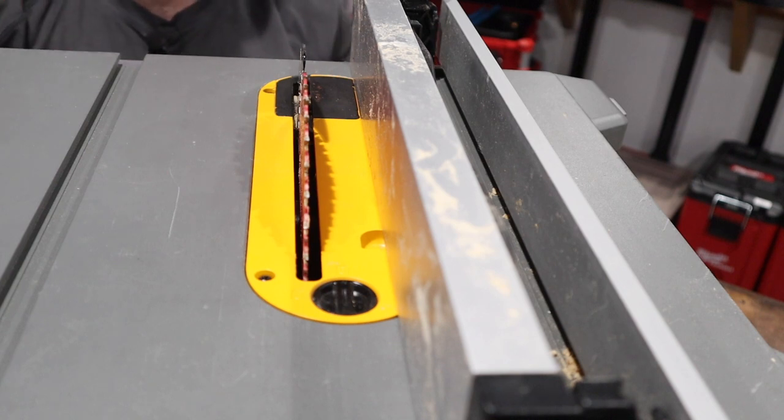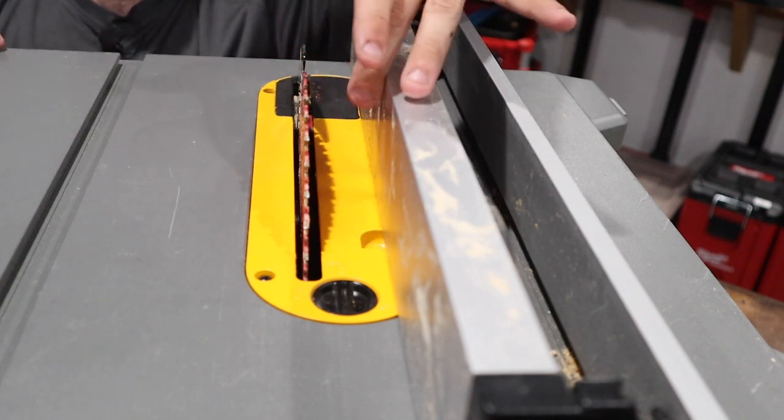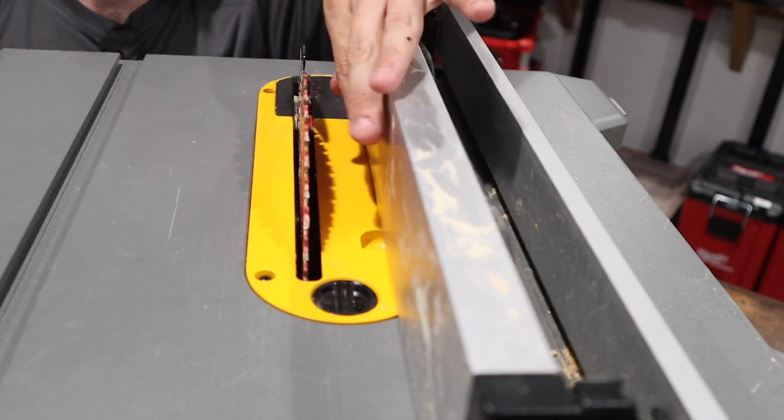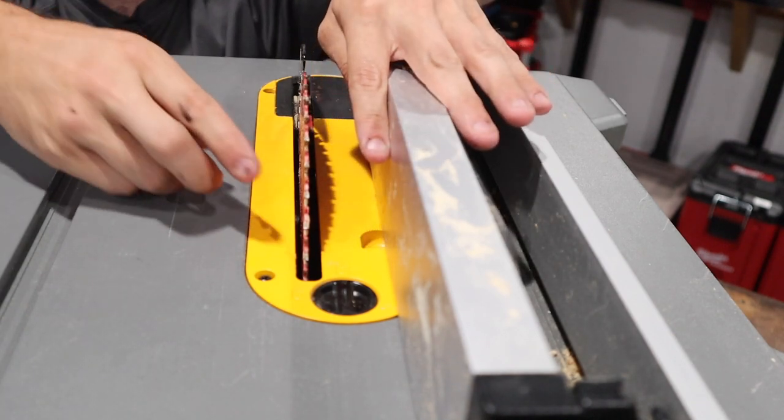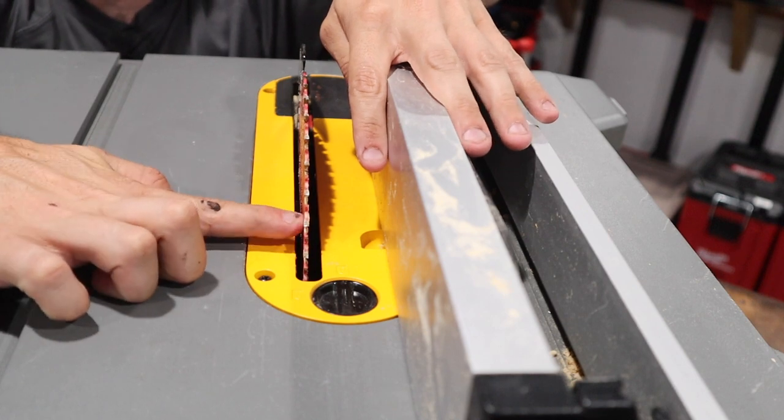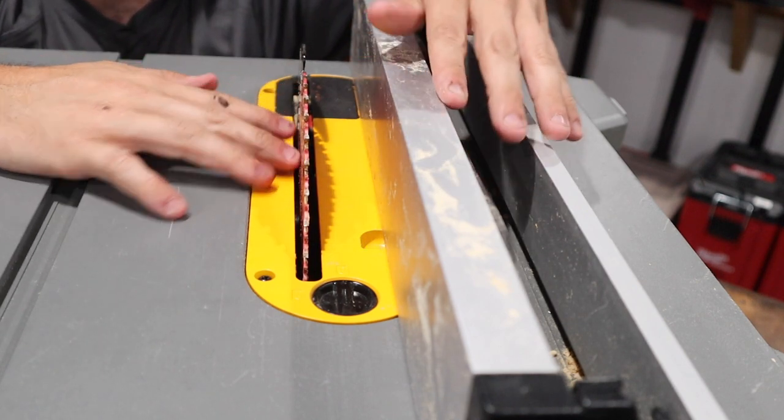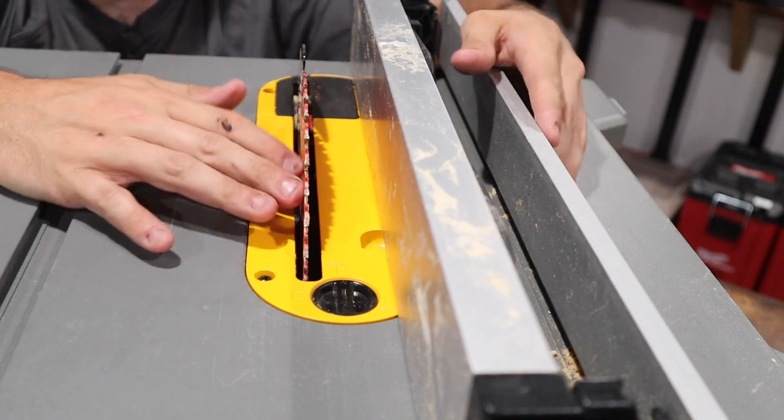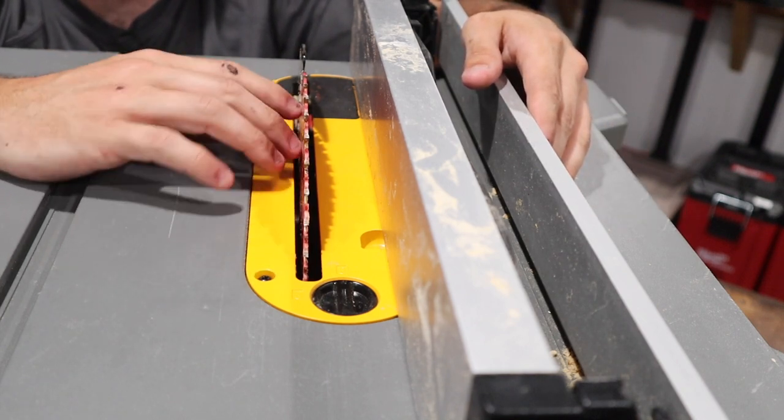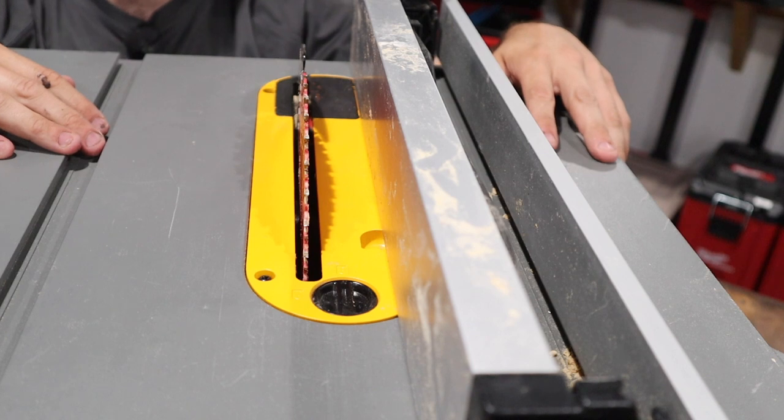If you had a dial indicator, you could set your dial indicator up. Obviously your fence would be further away from your blade. But you could set up your dial indicator, and then you could reference a point here and reference a point here. And you can figure out that I've got a difference, or I'm right on the money and I have no difference. So that's another method you can do.